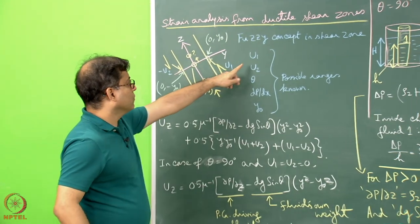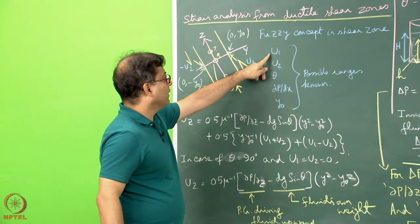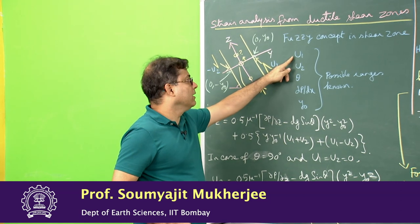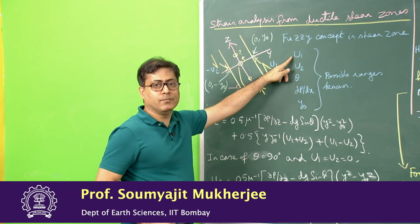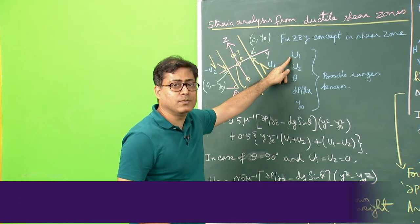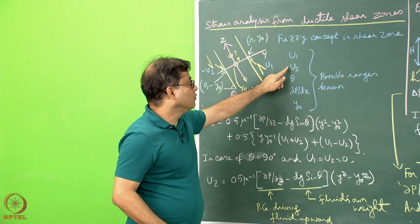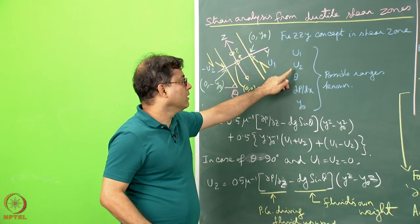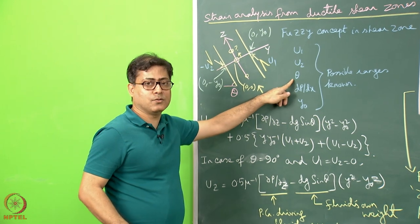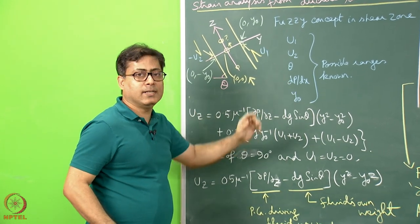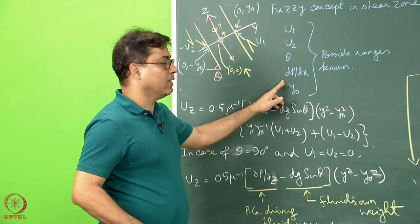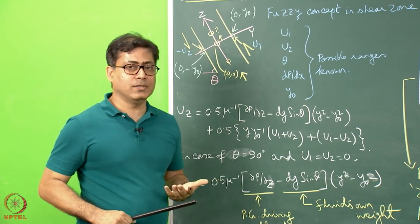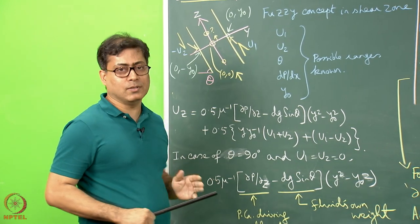In a ductile shear zone, the U1 value, whether it is a few millimeters per year or whether it varies between say 2 mm to 3 mm per year. U2 can vary — we do not know the exact number. Theta, the dip of the shear zone, can vary, and the pressure gradient can vary. This variation can be because of our lack of understanding of the shear zone, or with time also.